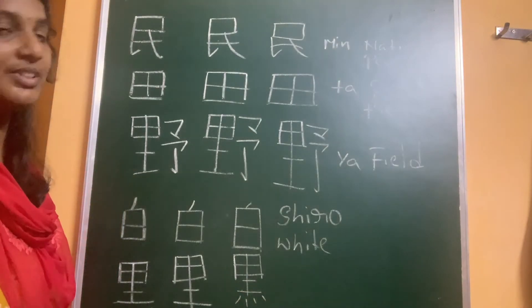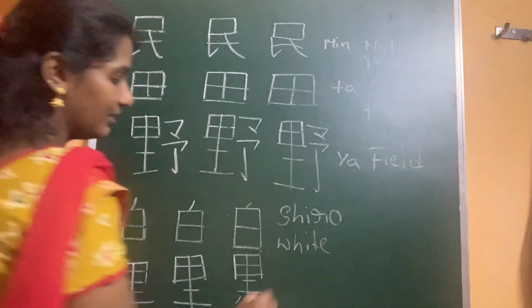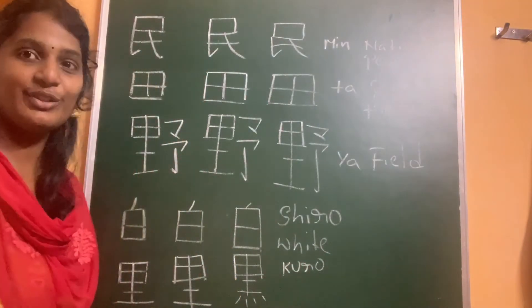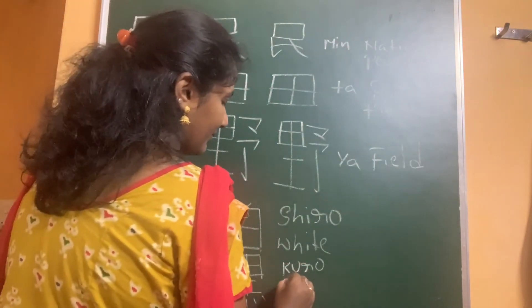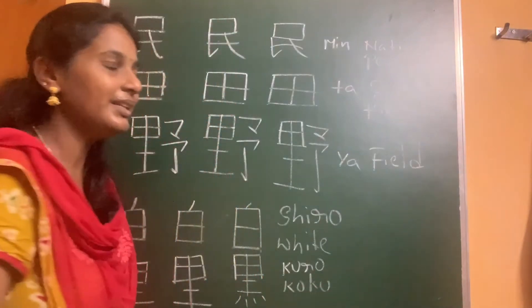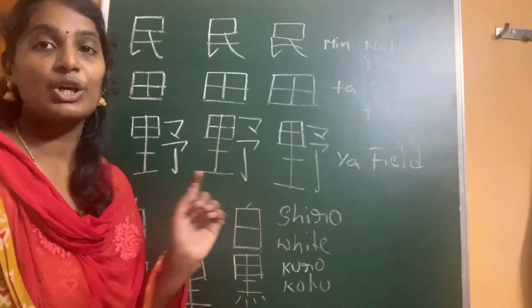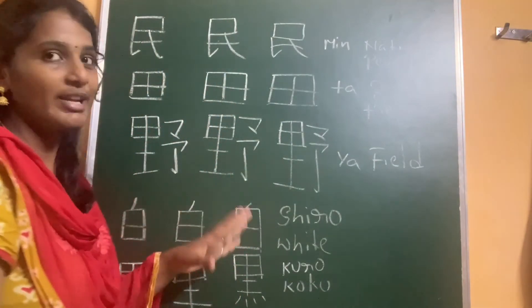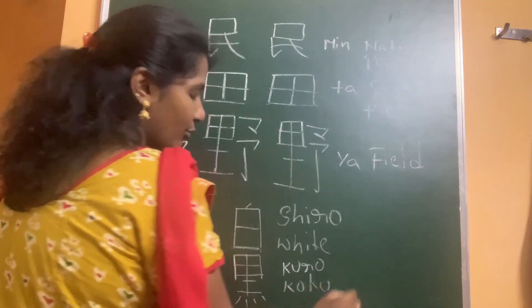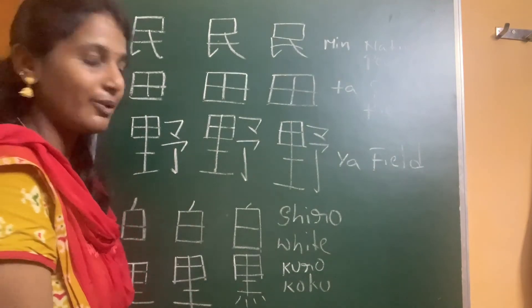This is the kanji for black. Kuroi is also an e-adjective, or koku. For example, the blackboard we call it kokuban. Koku is black or kuroi is also black. Koku is actually onyomi and kuroi is kunyomi.